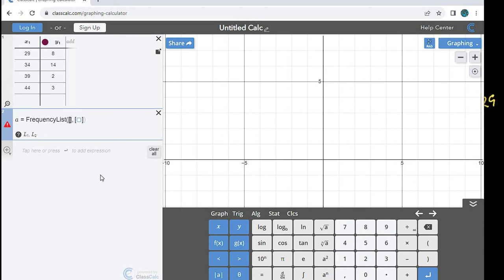So it's your choice if you want to start typing frequency. By the time you got to Q, it automatically plugged it in. It's going to ask you for your frequency list. So I'm going to put in my x1 value, comma, my y1 value.